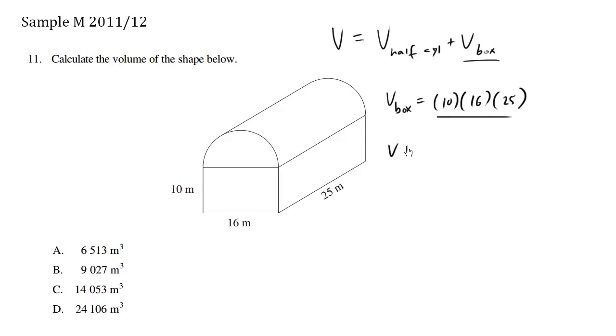But let's find the volume of the half cylinder. So it's going to be one half the volume of a cylinder, which happens to be the area of a circle times the length here. So the area of a circle is going to be pi r squared, and the length would be 25.